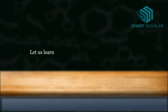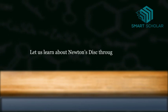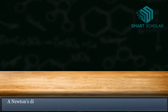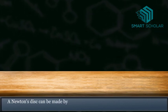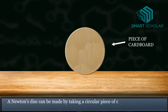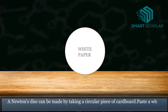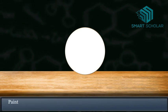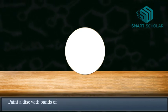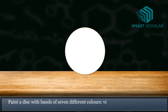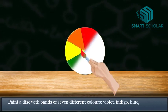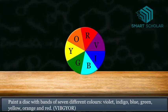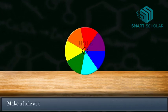Let us learn about Newton's disc through an activity. A Newton's disc can be made by taking a circular piece of cardboard. Paste white paper on the circular disc. Paint the disc with bands of seven different colors - violet, indigo, blue, green, yellow, orange, and red, known as VIBGYOR. Make a hole at the center of the disc.